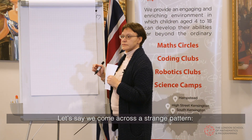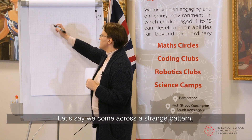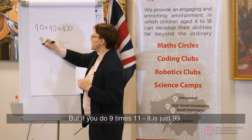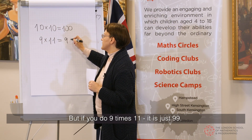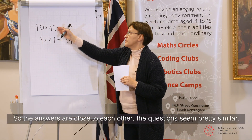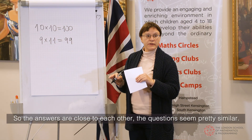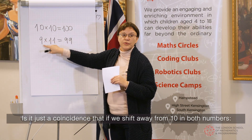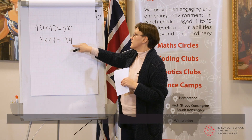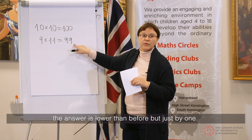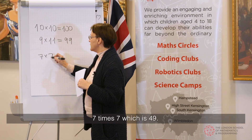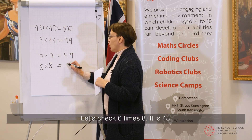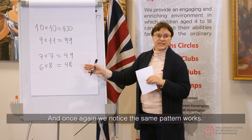Let's say we come across a strange pattern. 10 times 10 — everyone knows it's 100. But if you do 9 times 11, that's just 99. The answers are close to each other; the questions seem pretty similar. Is it just a coincidence that if we shift away from 10 in both numbers — one number goes down, the other goes up — the answer is lower than before, but just by 1? Let's check something else: 7 times 7 is 49. The next question we should ask ourselves: let's check what 6 times 8 is. Well, it's 48. And once again, we notice the same pattern works.